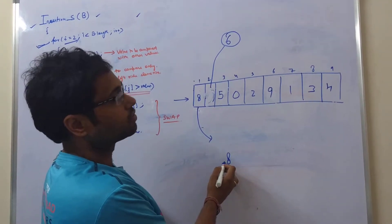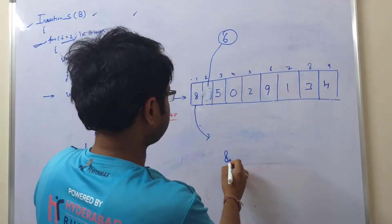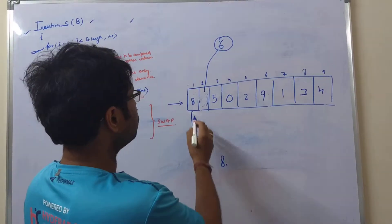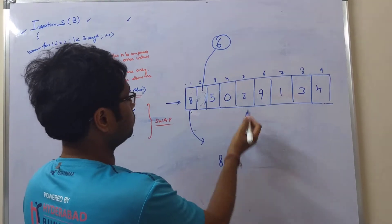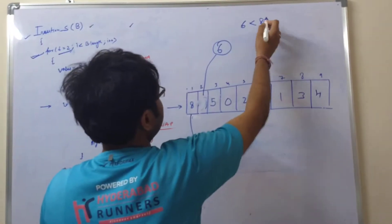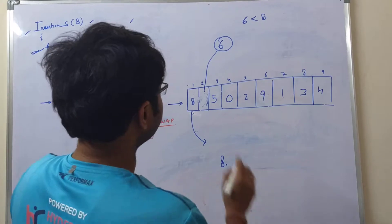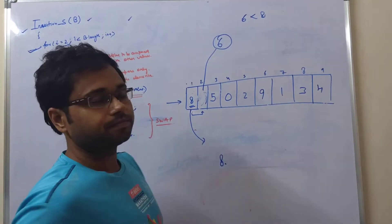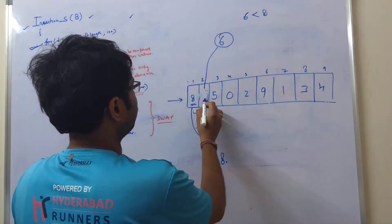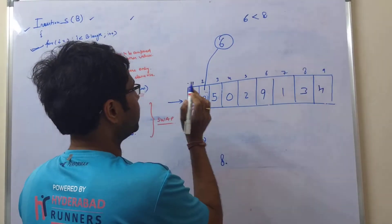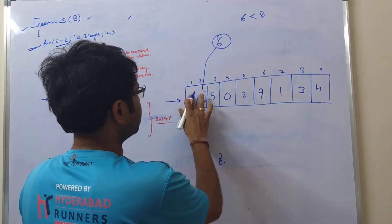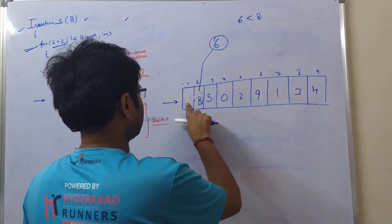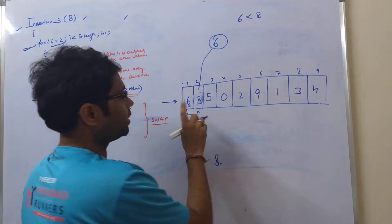We check whether 6 is larger or smaller than 8. Six is less than eight, so we have to shift the bigger number — 8 — towards the right. We shift 8 here and place the number 6 here. So now 6 and 8 are already sorted.